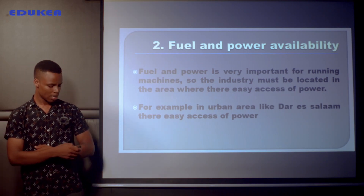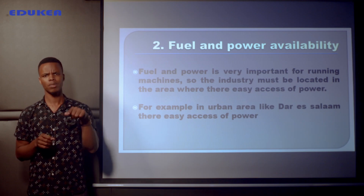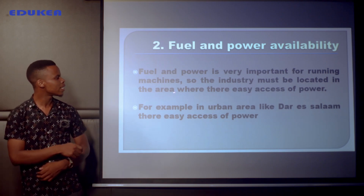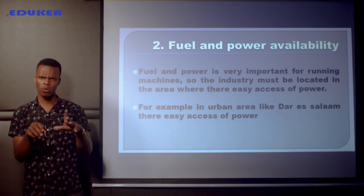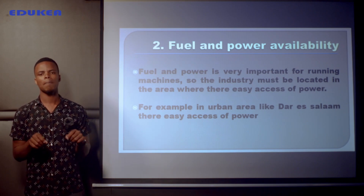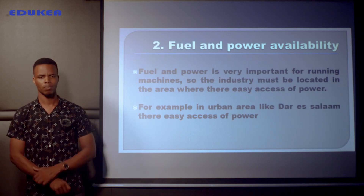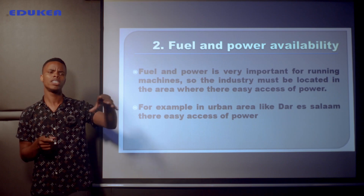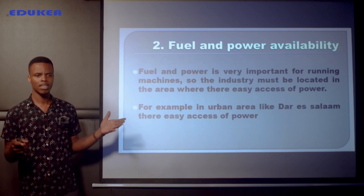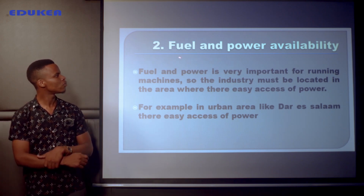Another point is fuel and power availability. Here we talk about energy. In order to establish an industry, machines are involved, so there must be energy to help run the machines. The industry must be located in an area where there is access to power. For example, in urban areas like Dar es Salaam, there is access to power. Many rural areas still lack electricity, so Mr. Tumbile should consider areas like urban Dar es Salaam where energy such as electricity and gas is easily available.